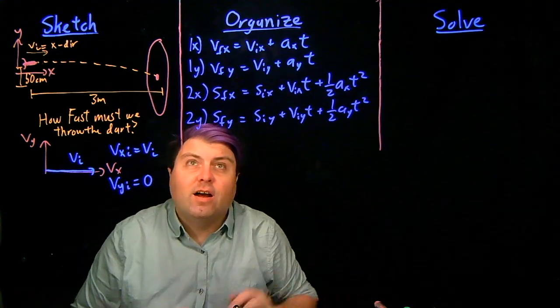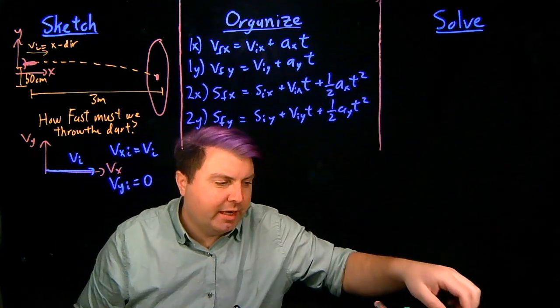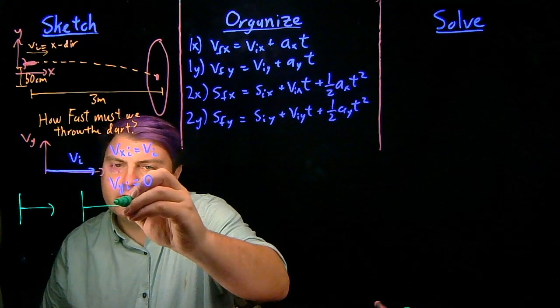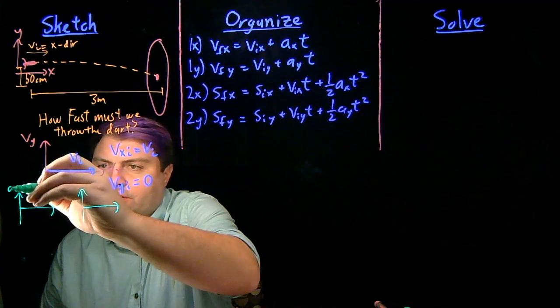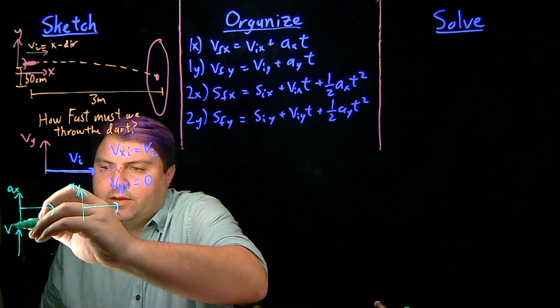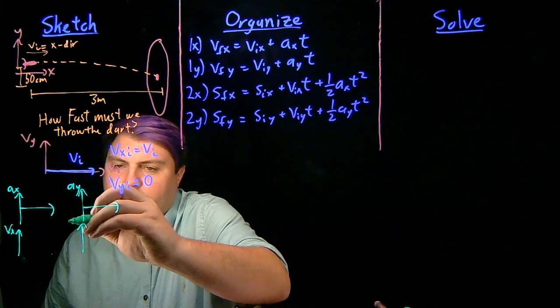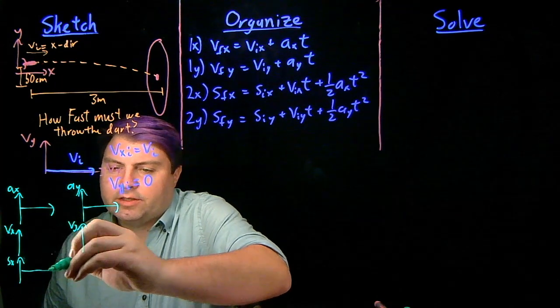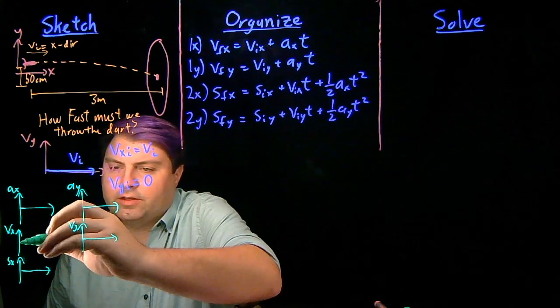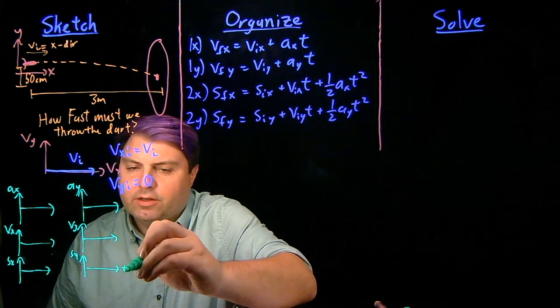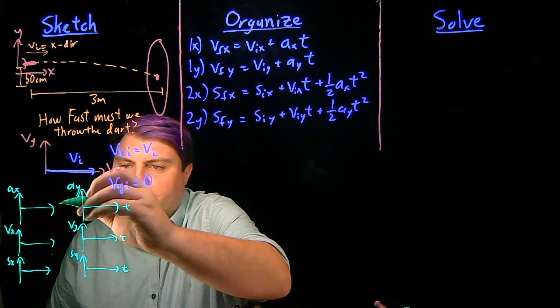Also in our sketch steps, we can have a couple of other graphs: ax, ay, vx, vy, and sx, sy, with time as the x axis for all of these.